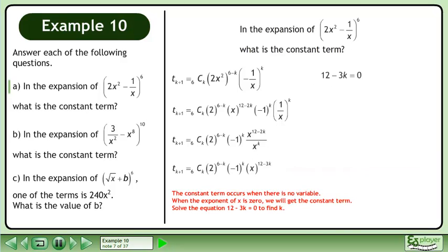The constant term occurs when there is no variable. When the exponent of x is 0, we will get the constant term. Solve the equation 12 - 3k = 0 to find k.